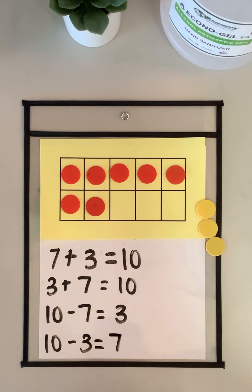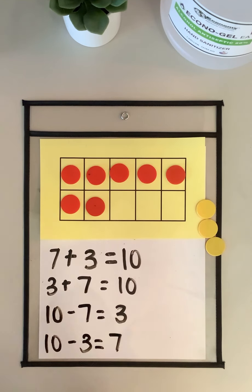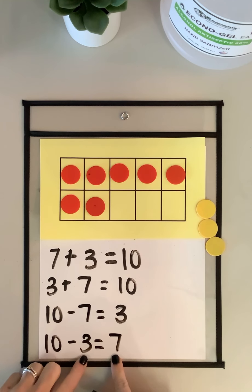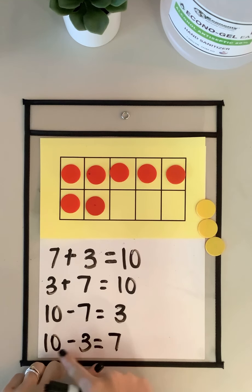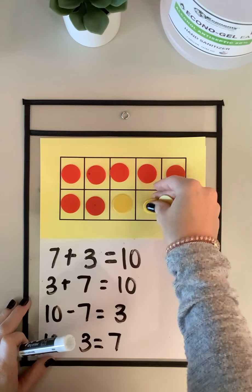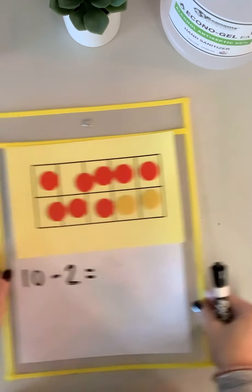Today we're gonna learn the strategy subtraction 10 partners. We are going to learn that there are numbers that are 10 partners, which means that they add together and equal 10. 3 and 7 is one example of 10 partners — when you add 3 and 7 together you get 10. Knowing our 10 partners is going to help us solve subtraction problems, and we can use fact families to help us too.